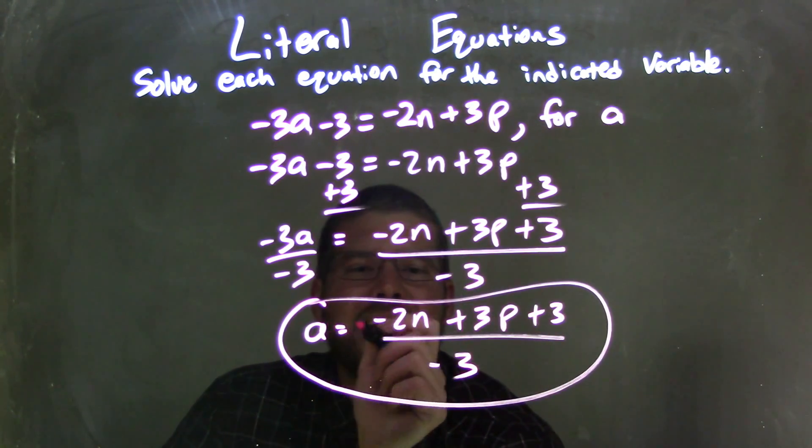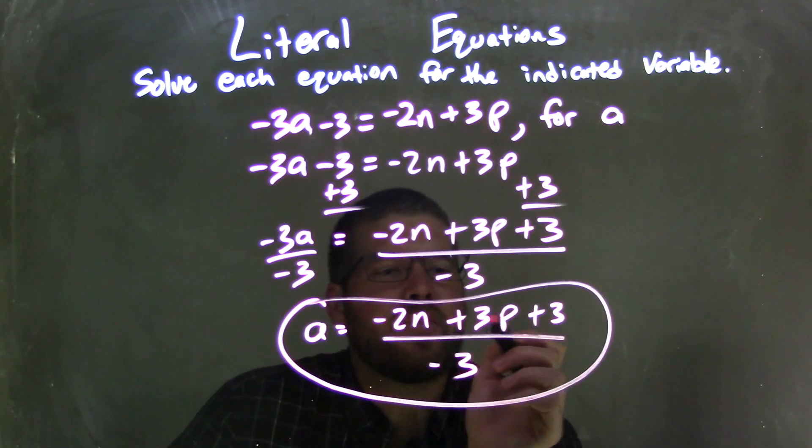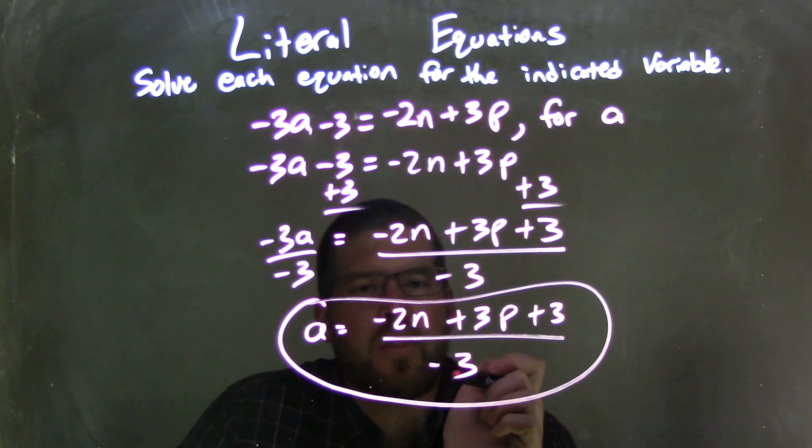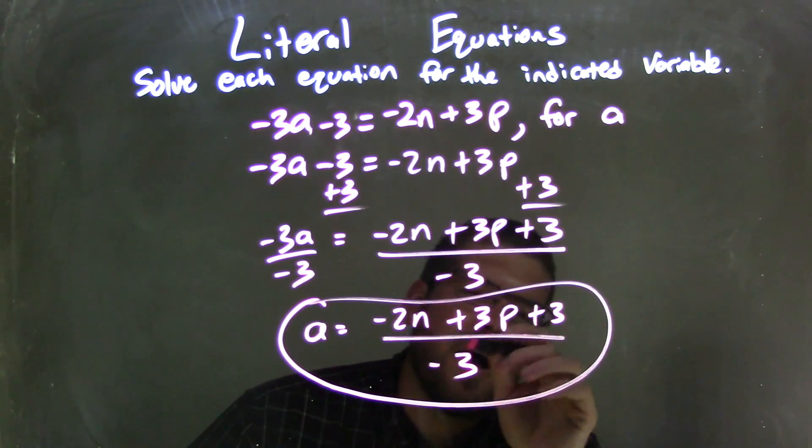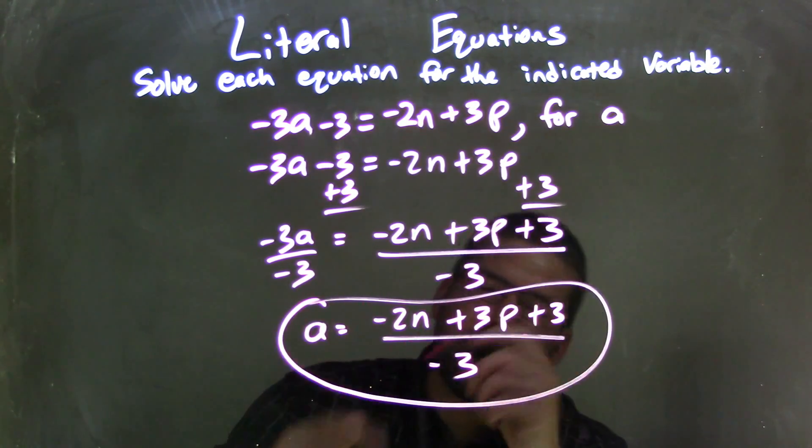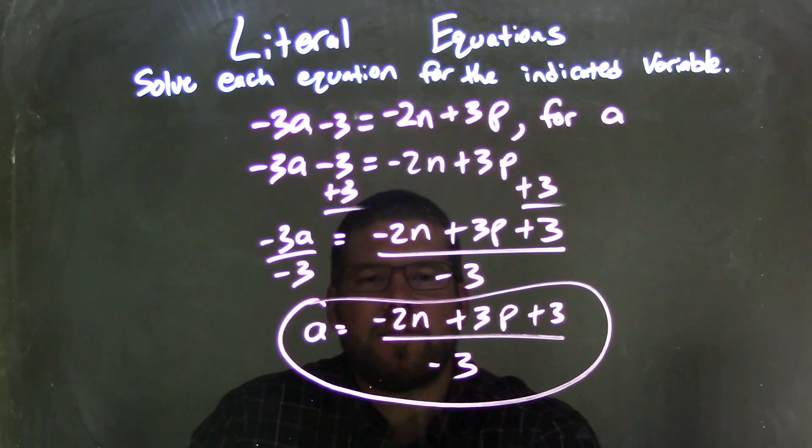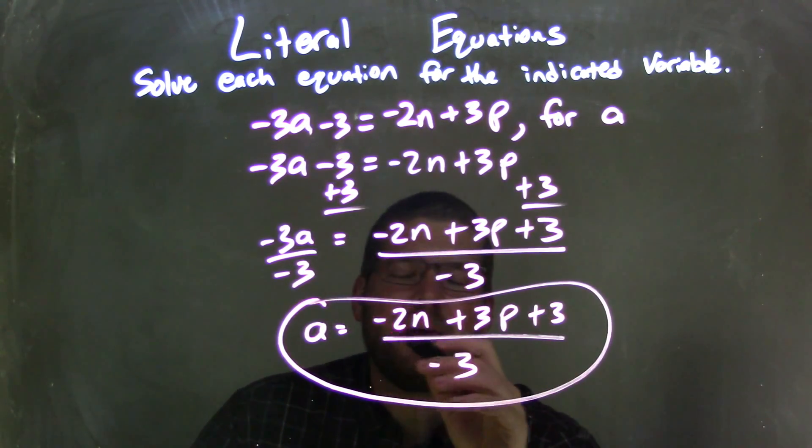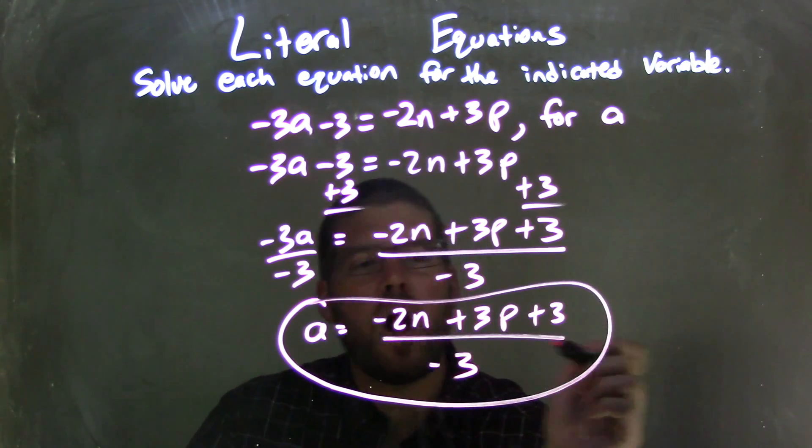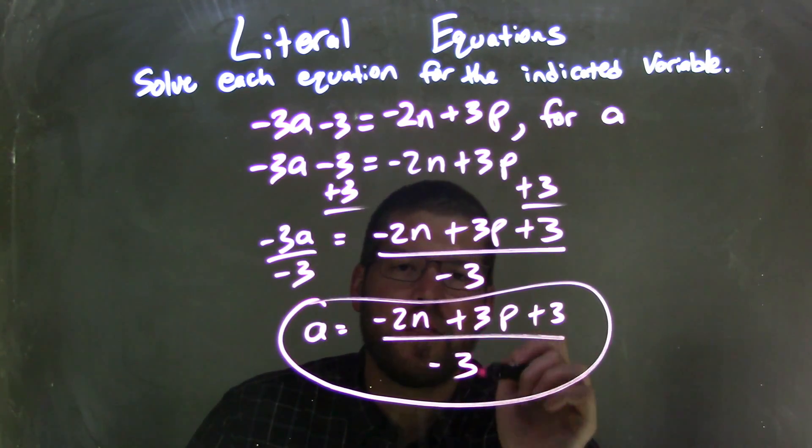That left me with a equals negative 2n plus 3p plus 3 all over negative 3. Now some people would distribute that negative to the top and make these positive. I'm not worrying about it. I think it's fine the way it is. And so I would accept this as my final answer, being a equals negative 2n plus 3p plus 3 all of that over negative 3.